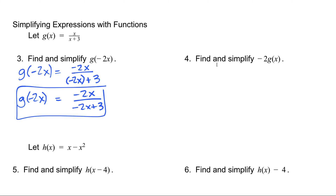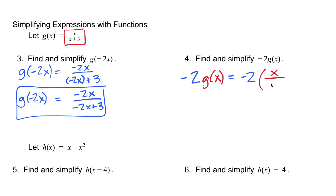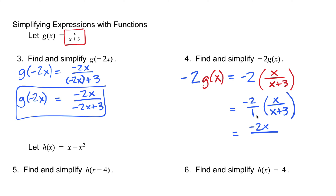In the next problem, instead of my input being negative 2x, I'm looking at negative 2 times g of x — negative 2 times the whole function. My whole function g of x is x over x plus 3. So I'm going to write negative 2, then replace g of x with x over x plus 3. This is an integer times a fraction, so I put negative 2 over 1 times x over x plus 3, and multiply across. That gives negative 2x over x plus 3. So that is negative 2 times g of x.